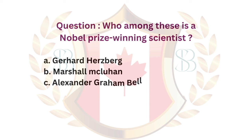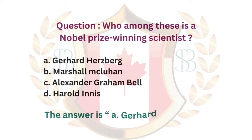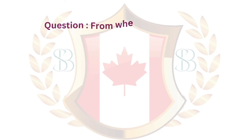Question. Who among these is a Nobel Prize winning scientist? a. Gerhard Herzberg. b. Marshall McLuhan. c. Alexander Graham Bell. d. Harold Innis. The answer is a. Gerhard Herzberg.